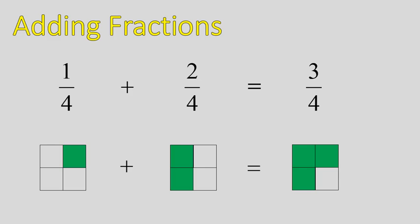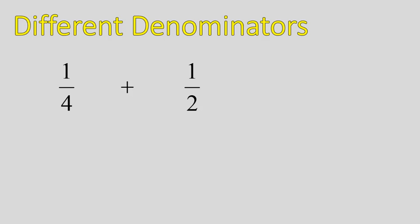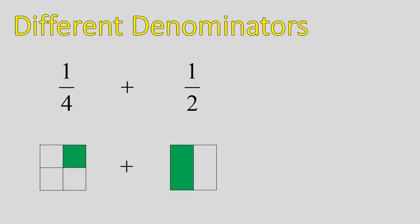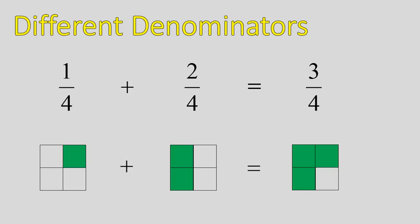1 part out of 4 plus 2 parts out of 4 gives you 3 parts out of 4. Now, when we're adding numbers with different denominators, it's the same basic problem — 1 out of 4 plus 1 half — but it's harder to add these when you don't have the same denominator; you can't join them together. So what you need to do is make both fractions have the same denominator, and then you can add them like we did in the previous question.